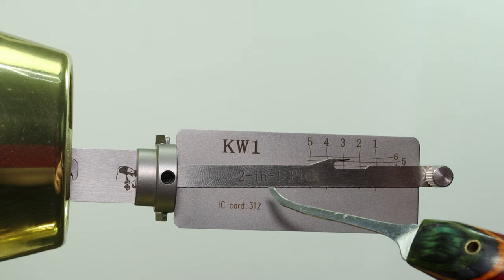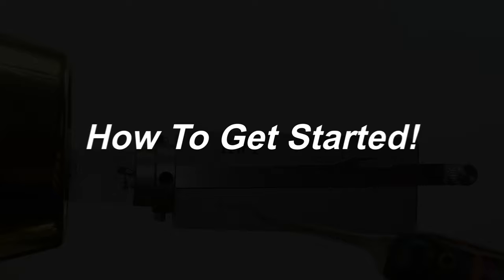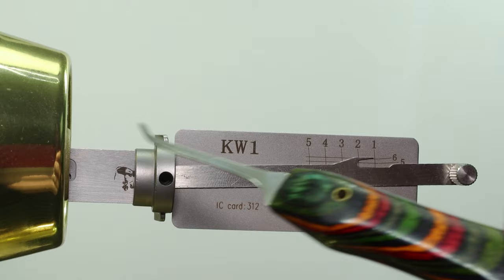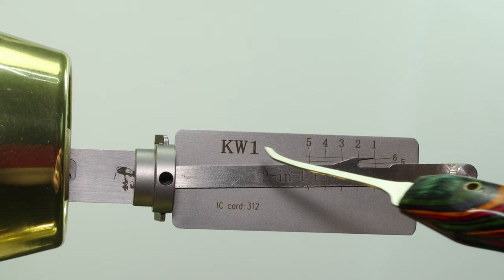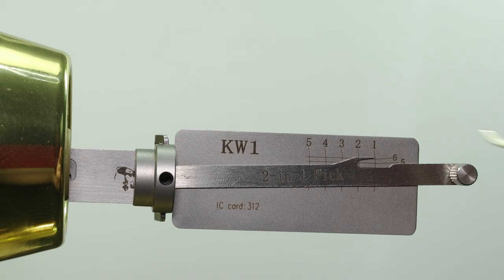In order to get started, the first thing you want to do is make sure the tool that you're using is going to align up with the correct keyway. So I have the KW-1 lishi, and that's going to line up with the KW-1 lock. Kwikset does make a KW-5 keyway, which is the 6-pin variant. You want to make sure that you're going to have the tool that's going to be able to accommodate all the pins you're working with, because if I put the 5-pin lishi into the 6-pin lock, I'm not going to be able to pick and decode the 6th pin, and that's going to make it an ineffective tool. So you always want to make sure that you're using the right lishi for the right lock.